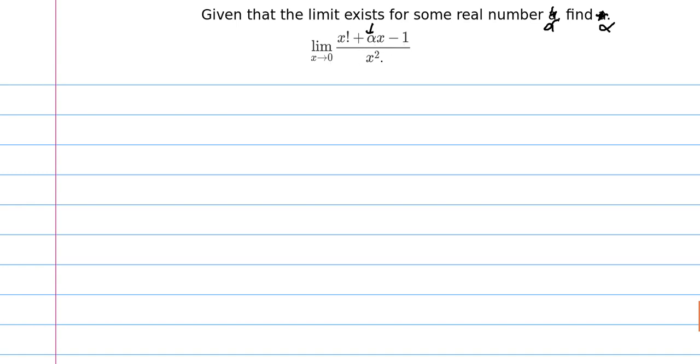If we plug in 0 into this limit, 0 factorial is 1, alpha times 0 is 0, minus 1 we get 0, and 0 squared is 0. So we get a 0 over 0 limit.